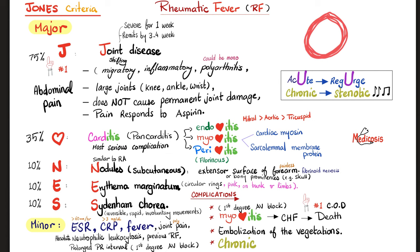Sydenham's chorea will be discussed in the next video. Complications of rheumatic fever include first-degree atrioventricular block (bradycardia), heart failure — the most common cause of death — and sterile vegetations on the valves that can embolize and potentially become infected. The disease can also become chronic, and chronic rheumatic fever leads to stenotic valvular disease.